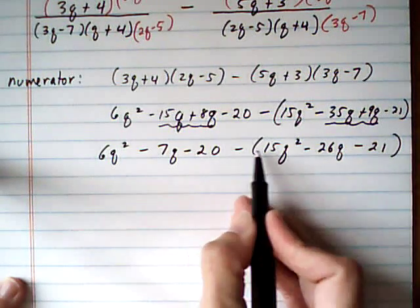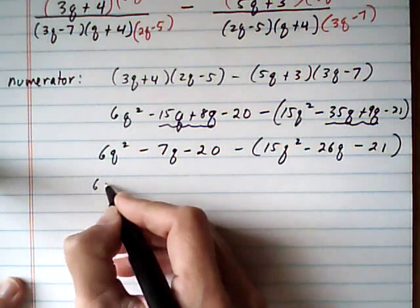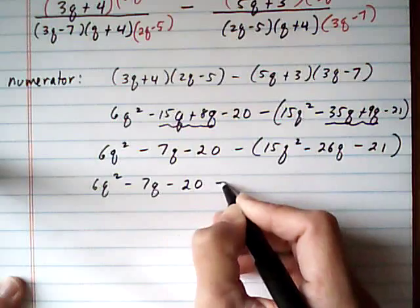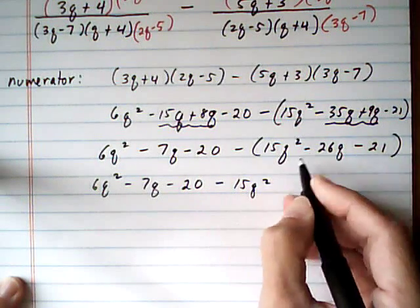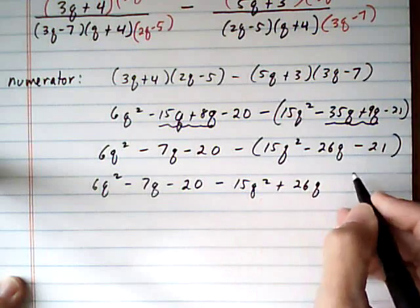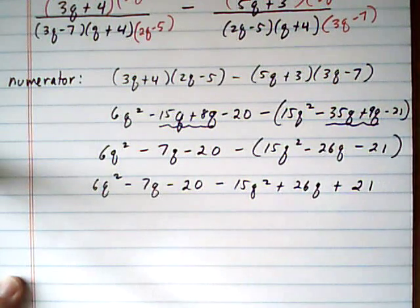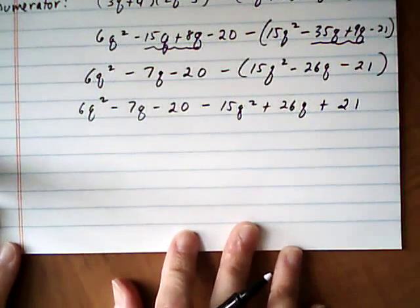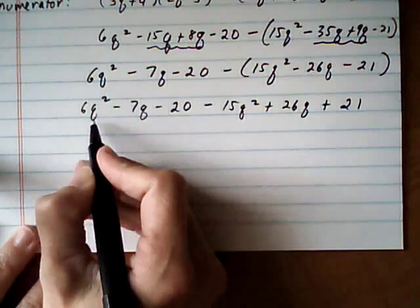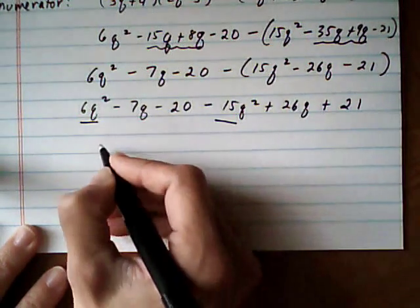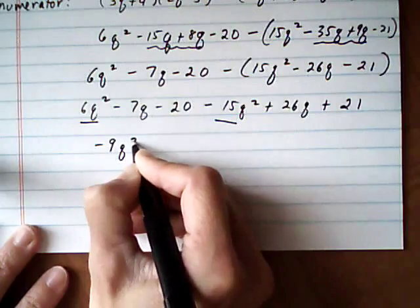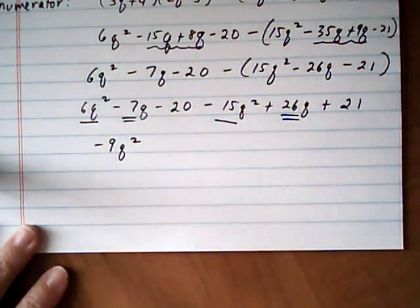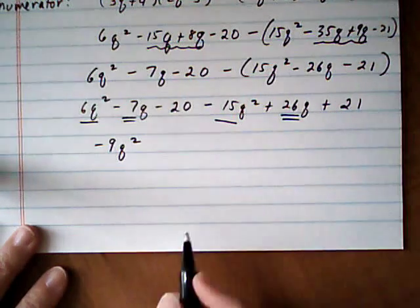And now let's go ahead and distribute that minus sign. 6q squared, take away 7q, take away 20, minus 15q squared minus minus is plus 26q minus minus plus 21. And now we want to keep going with combining like terms. So let's see, we've got a 6q squared and a take away 15q squared. So we have minus 9q squared, minus 7q plus 26q, and that's going to give us a plus 19q. Plus 1.